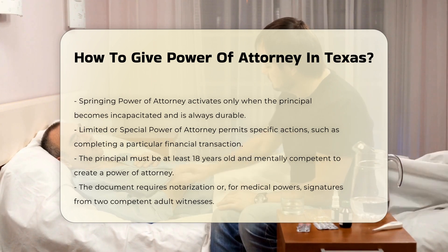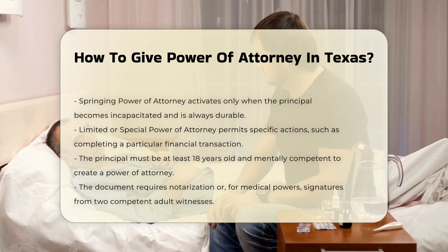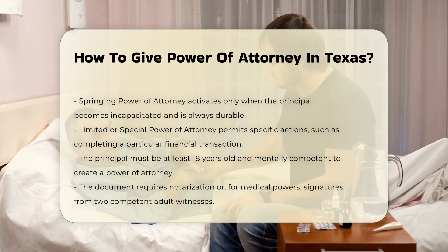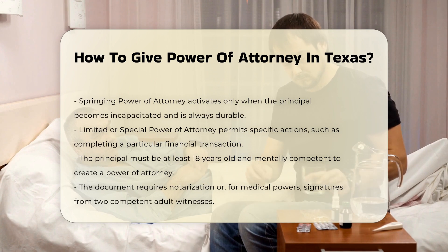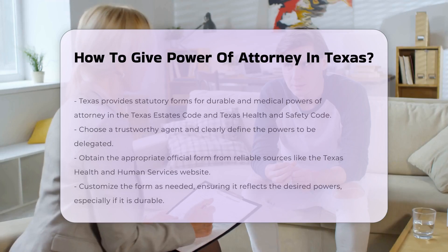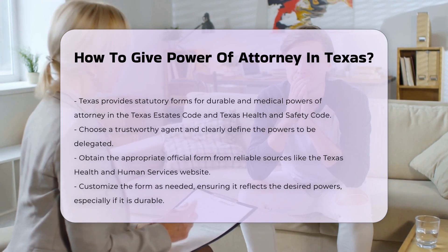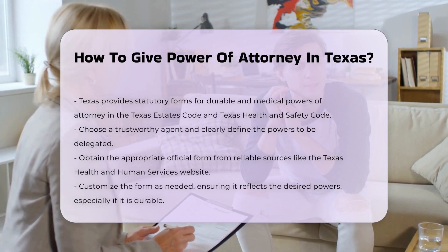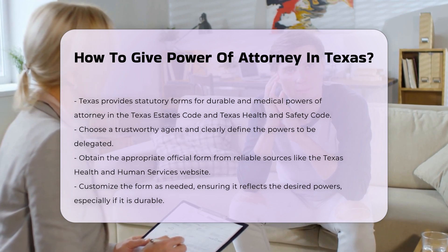Requirements for creating a power of attorney. Age and mental capacity: the principal must be at least 18 years old and of sound mind. Notarization and witnesses: the document must be signed before a notary public or, for medical powers of attorney, witnessed by two competent adults, one of whom must be disinterested. Texas provides statutory forms for durable and medical powers of attorney, found in the Texas Estates Code and Texas Health and Safety Code.